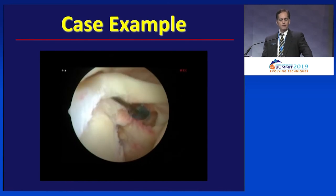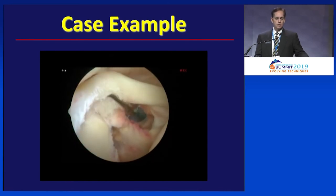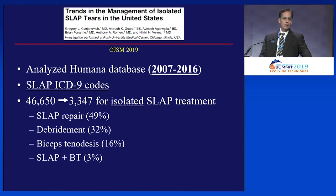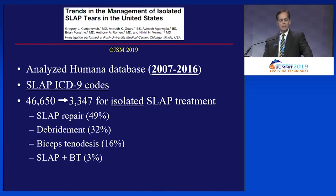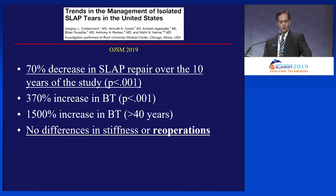If we look at the literature on SLAP repair versus tenodesis: in this database of 46,000 patients with SLAP ICD-9 codes, only 3,300 of them had isolated SLAP treatment. Half of those had repair. In this same study, over that 10-year period of time, there was a significant decrease in the number of SLAP repairs performed and an increase in biceps tenodesis.